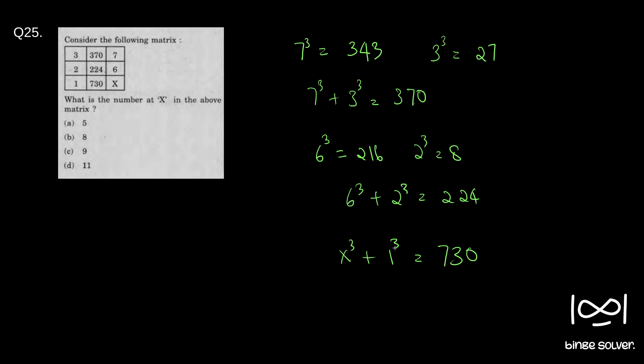Or x cube is 730 minus 1, which is 729. So as you know, this is 9 cube. So the correct answer is C.